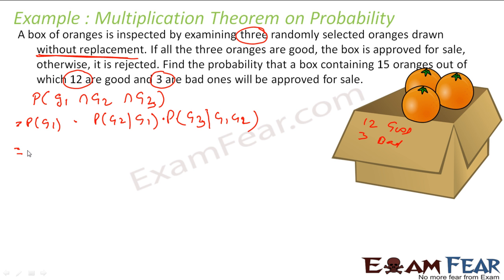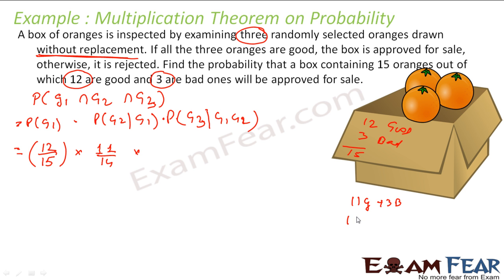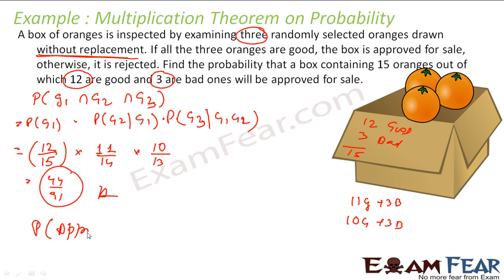Probability of first good: 12 good out of 15 total = 12/15. One good is removed, leaving 11 good and 3 bad out of 14. Probability of second good given first is good = 11/14. Another good is removed, leaving 10 good and 3 bad out of 13. Probability of third good = 10/13. Multiplying: (12/15) × (11/14) × (10/13) = 44/91. That is the probability the box is approved for sale.